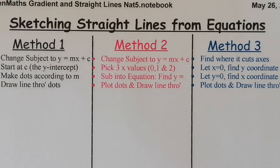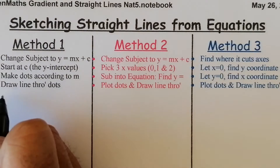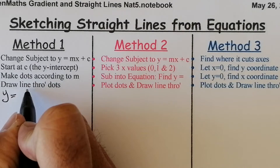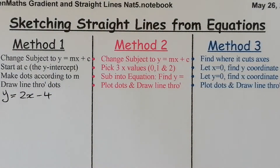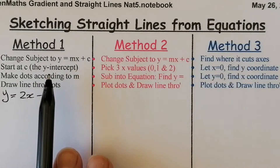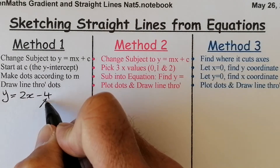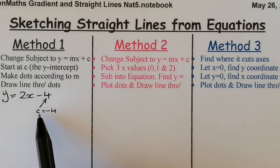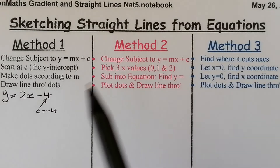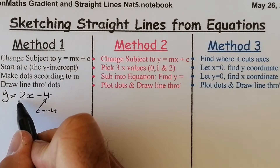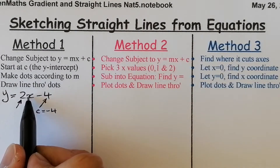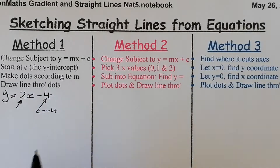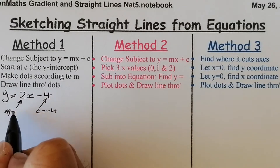The first line we're going to work on has equation y equals 2x minus 4. For Method 1, remember from the last couple of videos — we find the c value. I know c equals minus 4, which is where the line cuts through the y-axis — that's my starting point. I then find my gradient: the number in front of x is my gradient, so m equals 2.